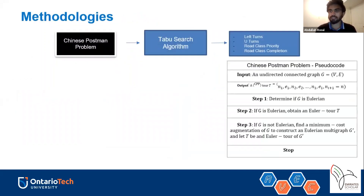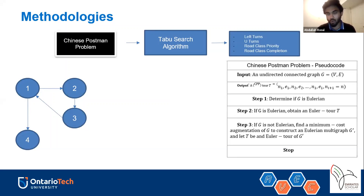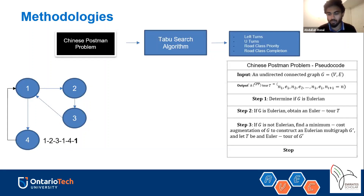Going deeper into the methodologies, the first is the Chinese Postman Problem. It helps in completion of your road networks. For example, if you have a simple road network with nodes one, two, three, four — representing intersections — and edges representing roads, and you need to plow each edge, you must traverse every edge. If you go from one to two to three to four, you cannot come back to one without an extra edge. The Chinese Postman Problem identifies where extra edges are needed to complete circuits — essentially creating U-turns — making a non-Eulerian circuit into an Eulerian one.